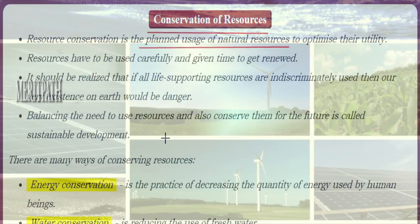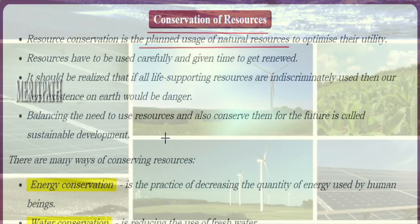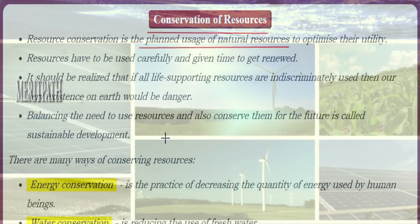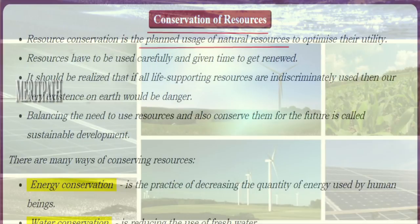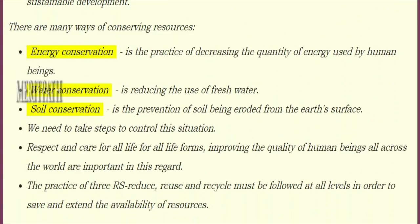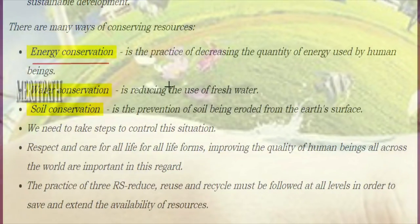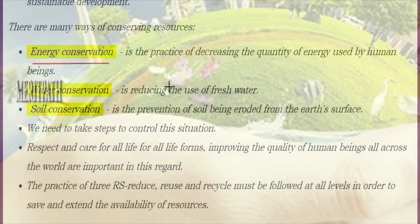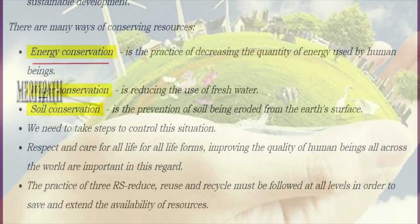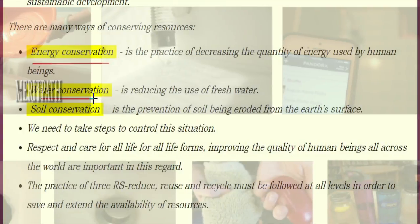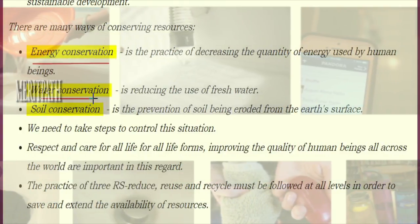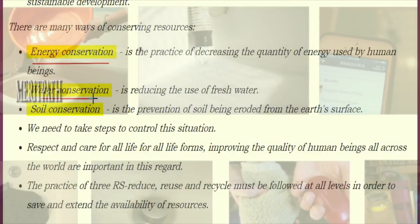Steps for conserving resources include recycling and reusing. We need to use renewable resources, conserve diversity, reduce cutting of trees, and preserve soil from erosion. Energy conservation means decreasing the quantity of energy used — for example, switching off lights and fans when we are not at home, school, or college. Water conservation means reducing the use of fresh water, such as closing a leaking or open tap.